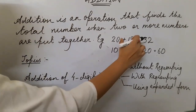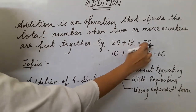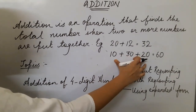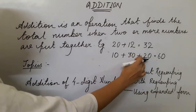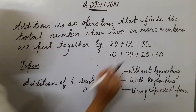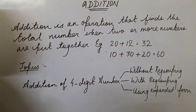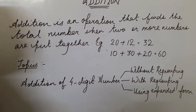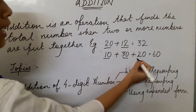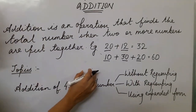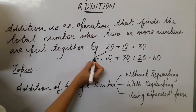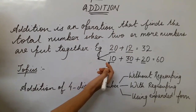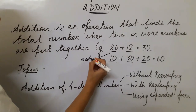So 20 plus 12 — 2 numbers are here — gives the answer 32. While 10 plus 30 plus 20 — 3 numbers — gives the sum 60. These numbers 20 and 12, and similarly 10, 30, and 20, are called addends. Addends are those numbers which are put together to find a sum; the numbers which are to be added are called addends.